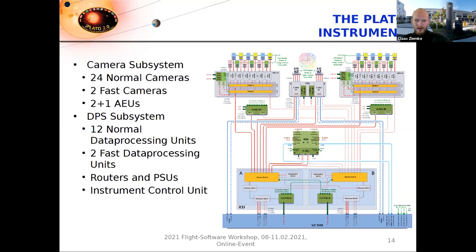Now it's a good moment to show the full picture of the instrument. On the top you can see the 24 cameras. Just below that are two main electronic unit boxes in blue, each containing six normal data processing units, SpaceWire routers, power supply units, and so forth. In between those two you can see the fast cameras and the fast electronic unit with the two FDPUs. The green boxes are ancillary electronic units providing very precisely regulated voltage supplies for the cameras and highly synchronized signals for CCD readout. On the bottom you can see the instrument control unit in cold redundancy, and the spacecraft interface.